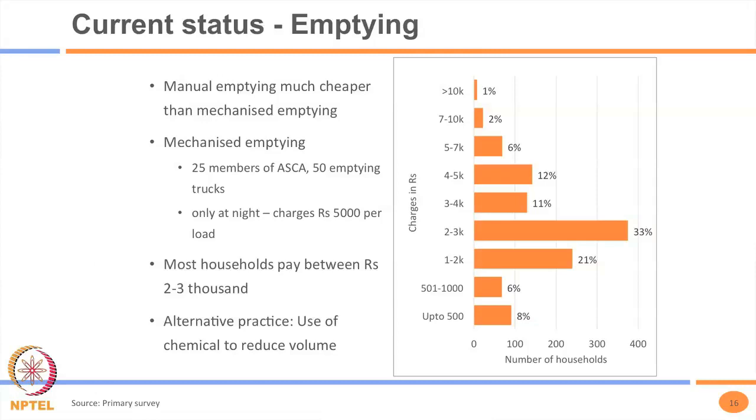We don't actually know where they dumped the first load. We also tried to find out from households how much they pay for emptying. Some households pay up to 500 rupees; many pay between 500 and 1,000 — largely for manual emptying, which is much cheaper for households. For mechanized emptying, some pay 7,000 to 10,000 rupees and more.